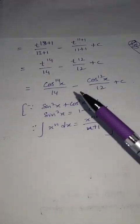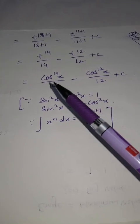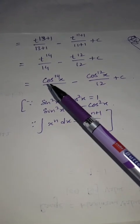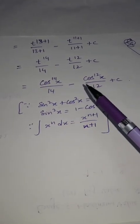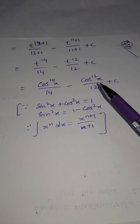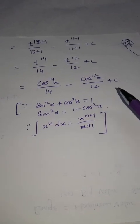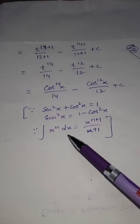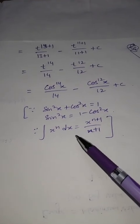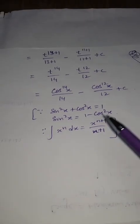The final answer is: minus cos¹⁴x divided by 14 plus cos¹²x divided by 12, plus c. Remember, these formulas are compulsory.